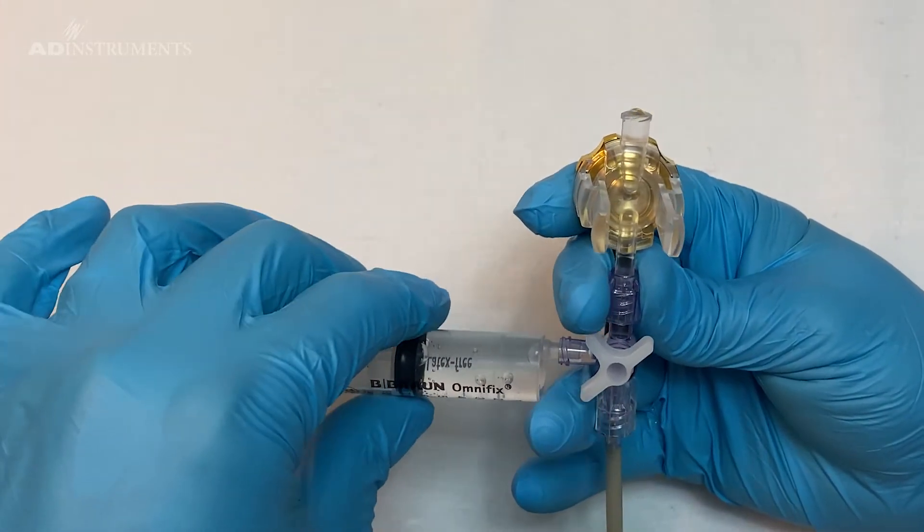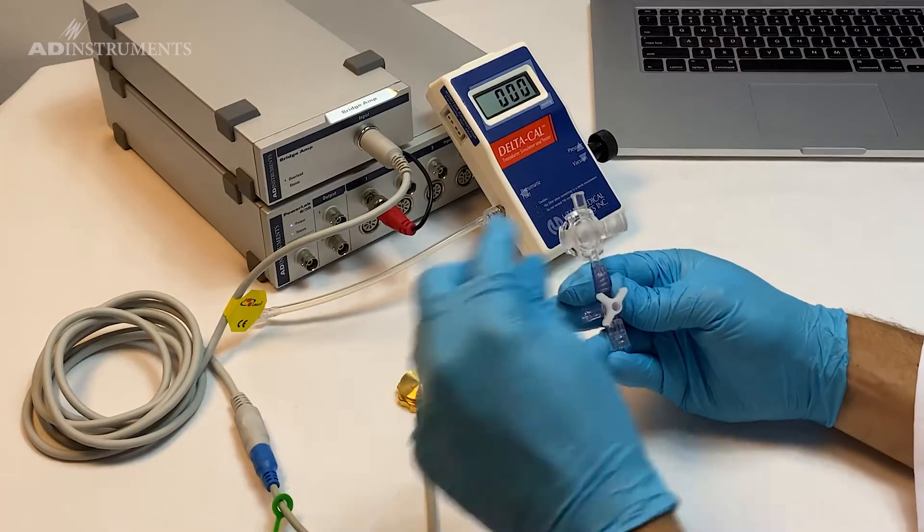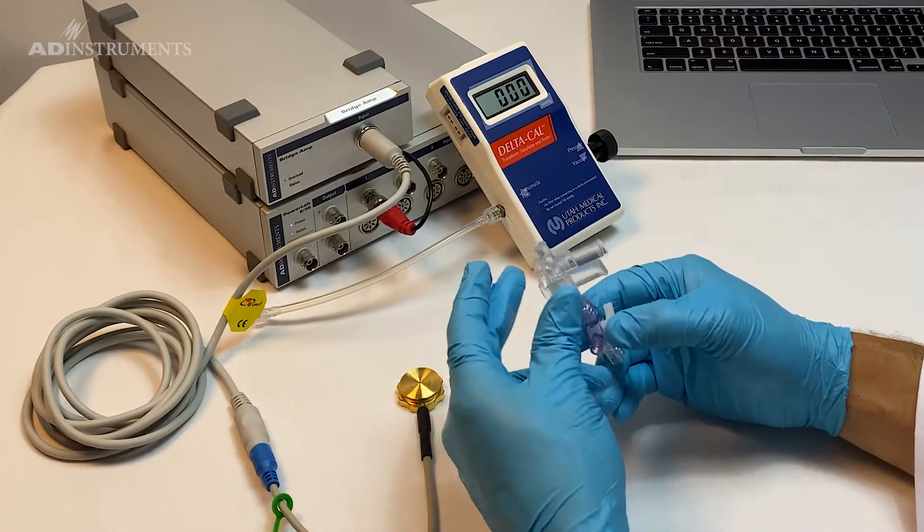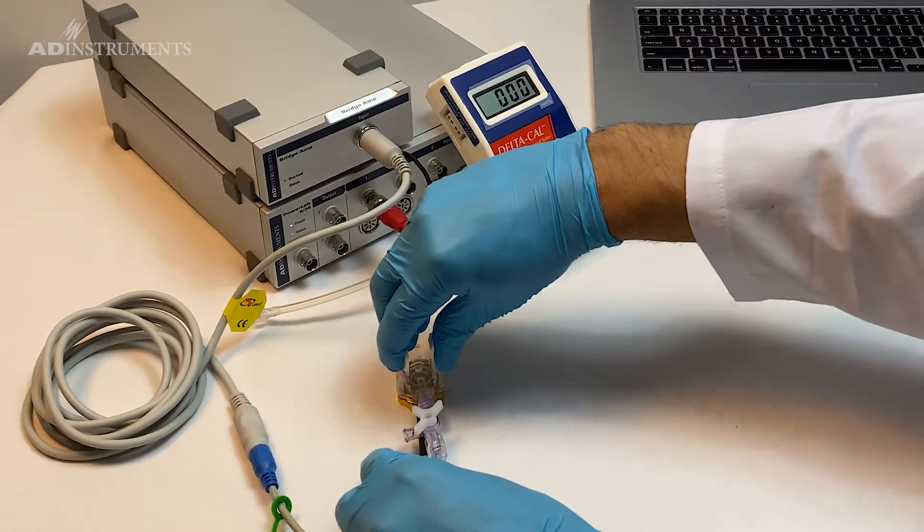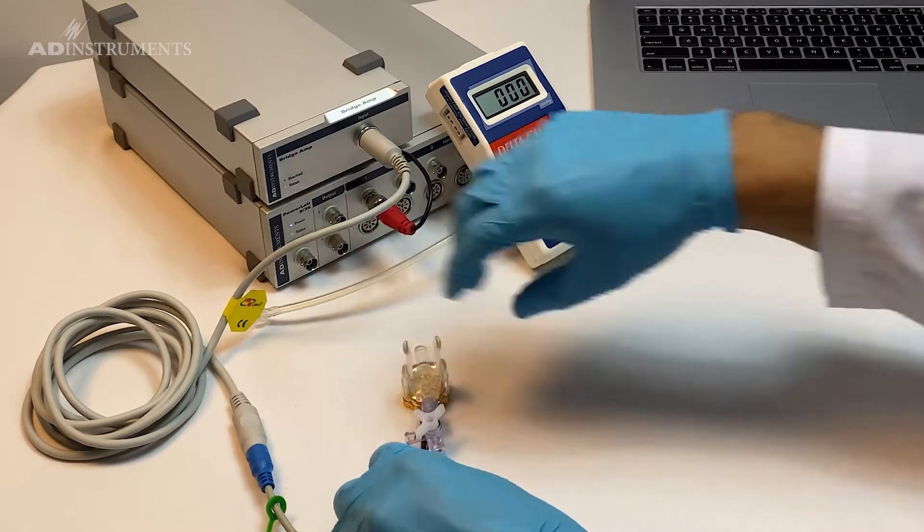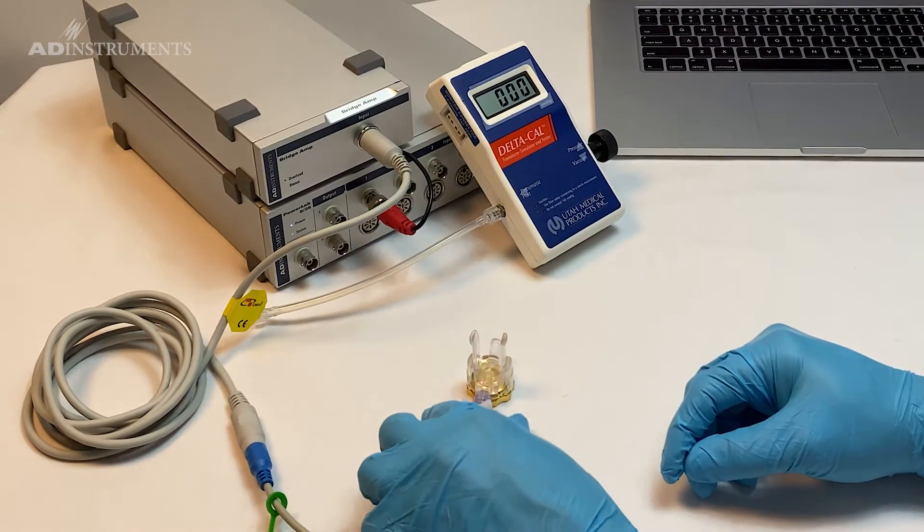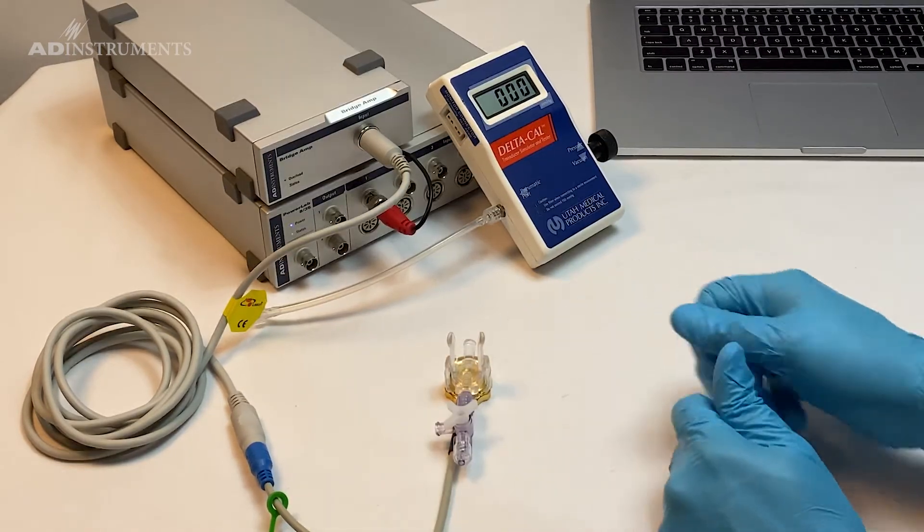I close off the tap and remove the syringe. Now it is ready for recording. I'll attach the dome to the transducer, and because the transducer is now open to air on one side, I can zero this transducer.